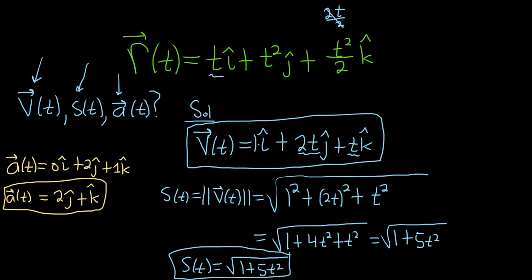Let's double check. The derivative of 1 is 0. Derivative of 2t is 2, so 2 j hat. Derivative of t is 1, so k hat. Everything looks good. I hope this video has been helpful. Good luck.